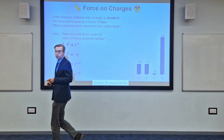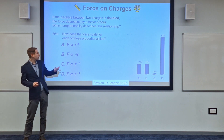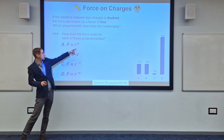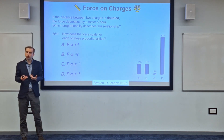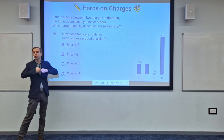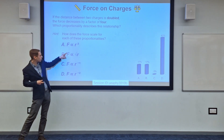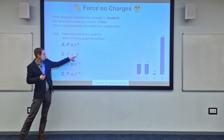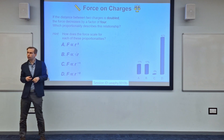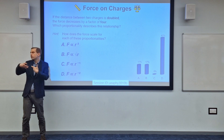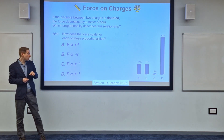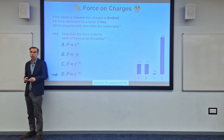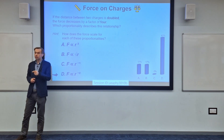If we take a look at the options: option A has force proportional to R squared — if we double our distance, the force increases by a factor of four, giving a force which increases as distance increases. Option B with the square root doesn't quite give us the proportionality relationship we're after. If we make the distance three times larger, we want the force to decrease by a factor of nine. The correct option which gives us that scaling relationship is option D. Very well done everybody who got option D.